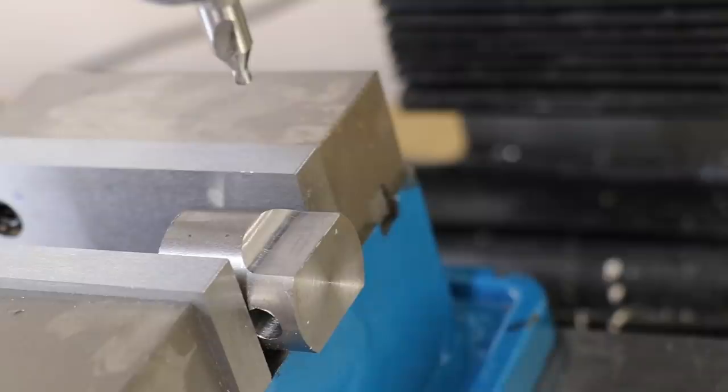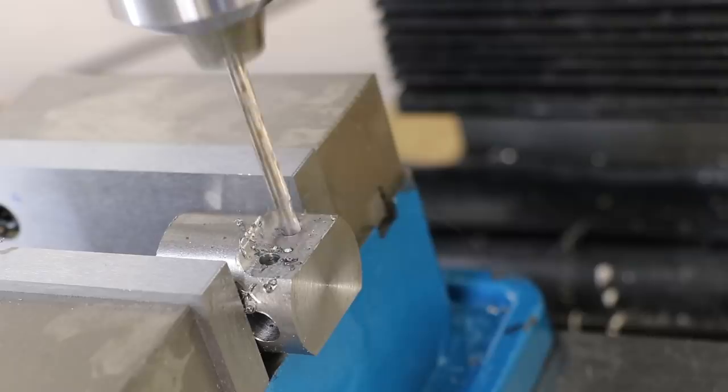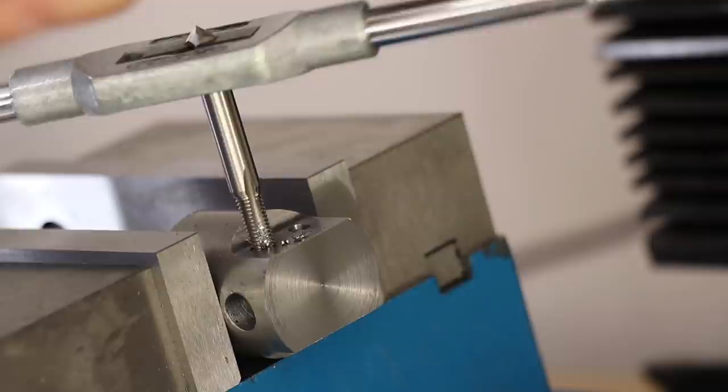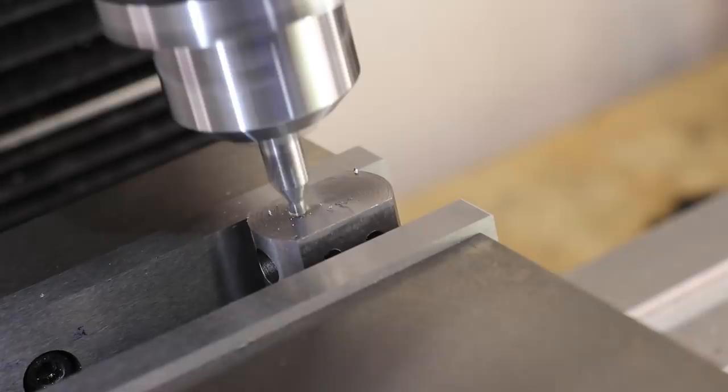To hold the boring bars in place I'll be using some M5 grub screws. Typically you would find three grub screws on a boring head, but here there just wasn't enough space to have three so I opted for two. The same goes for the vertical holes. Typically you'd see two offset holes next to each other, but there just wasn't enough space on this boring head.